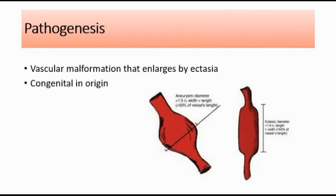For the pathogenesis, it happens due to a vascular malformation in the arteries within the liver that enlarge by ectasia. Ectasia means the dilation or distension of a tubular structure, in this case, the artery. Ectasia is the diffuse dilation of the artery, which means the whole artery is dilated, as seen in this picture over here — this is ectasia.